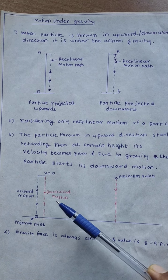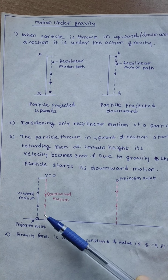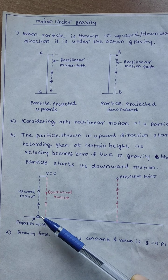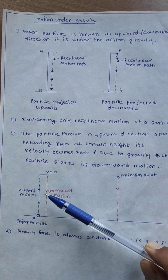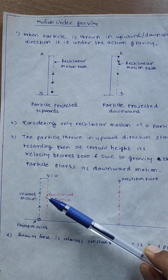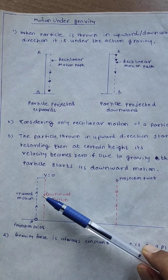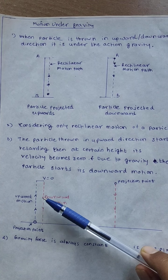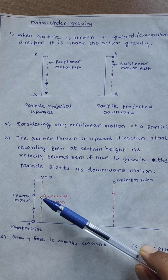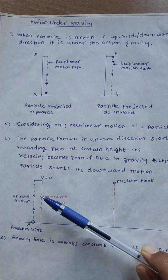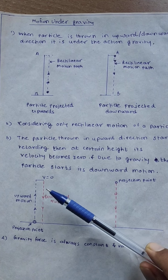So here what we see: this particle is thrown in upward direction. As gravity is continuously acting on this particle, the force pulls this particle in downward direction, and hence it reduces its velocity while going in upward direction.